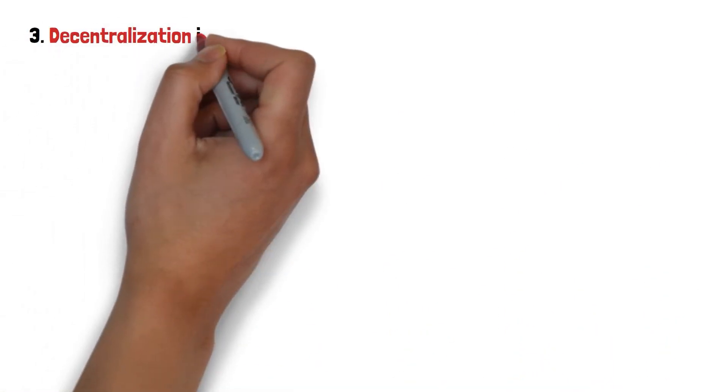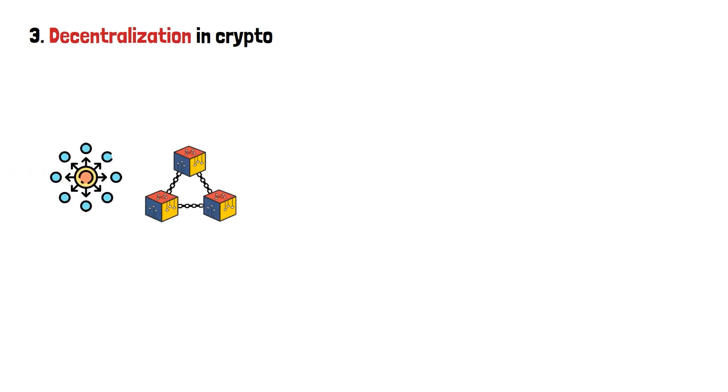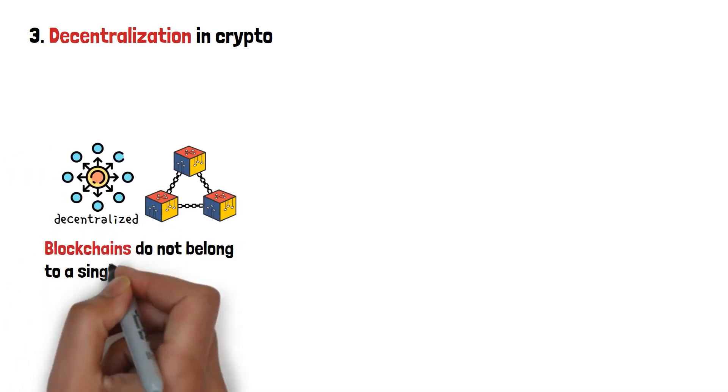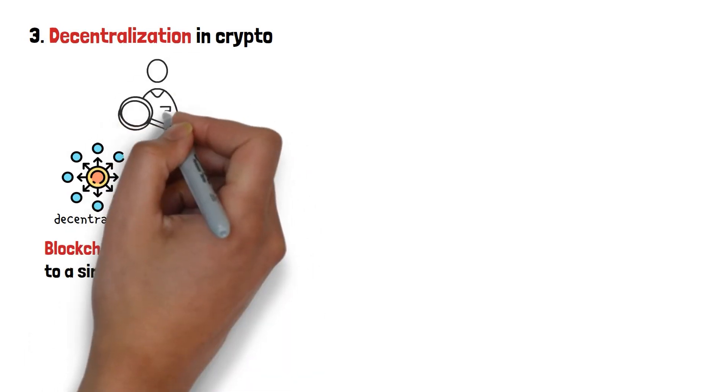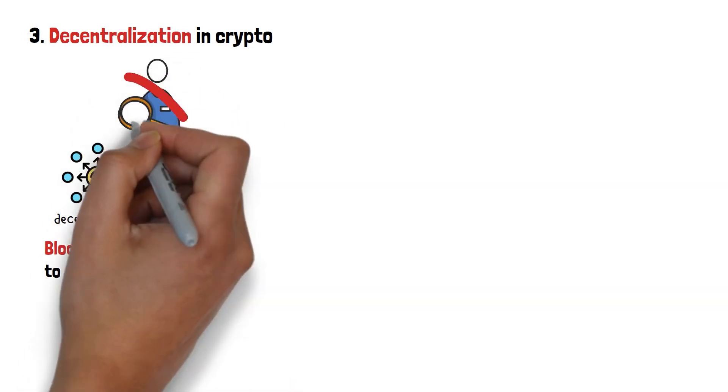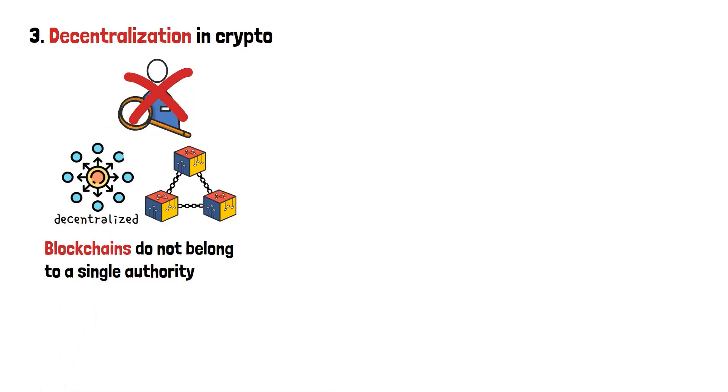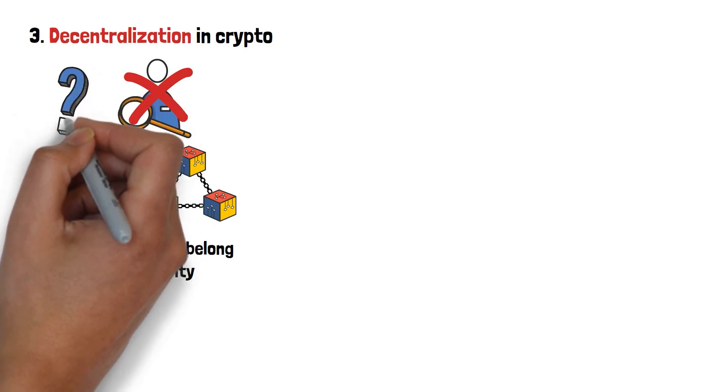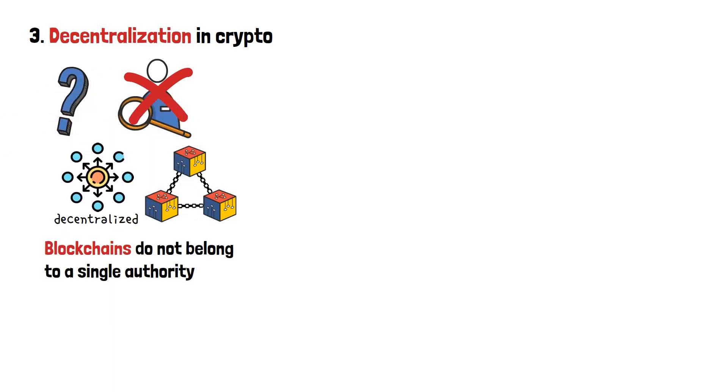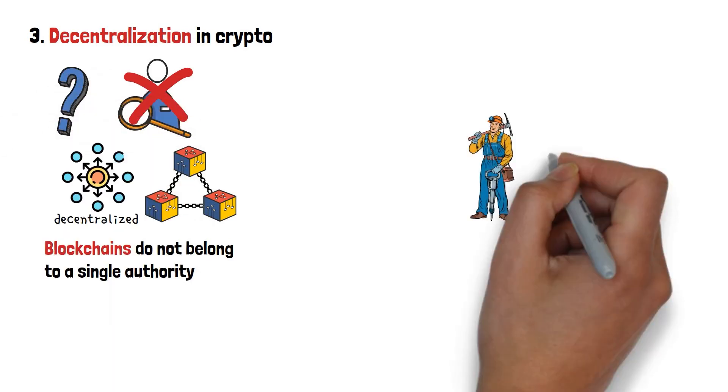So, decentralization in crypto. Most blockchains are decentralized. This simply means that they do not belong to a single authority. No company, CEO, or director owns the blockchain. In other words, there is no single central figure governing it. So, who's responsible for how the blockchain functions, then? If you said miners, you are very correct.